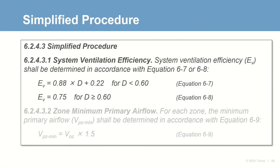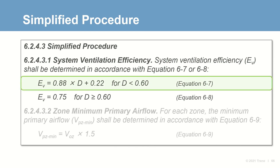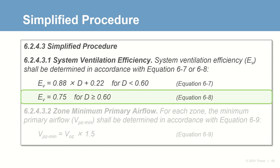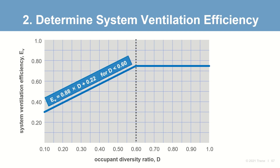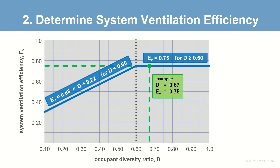When using the new simplified procedure, system ventilation efficiency is simply a function of the Occupant Diversity Ratio D. If D is less than 0.6, E-sub-V is calculated using a specific equation. If D is greater than or equal to 0.6, then E-sub-V equals 0.75. In our example, D is 0.67, so System Ventilation Efficiency is 0.75.